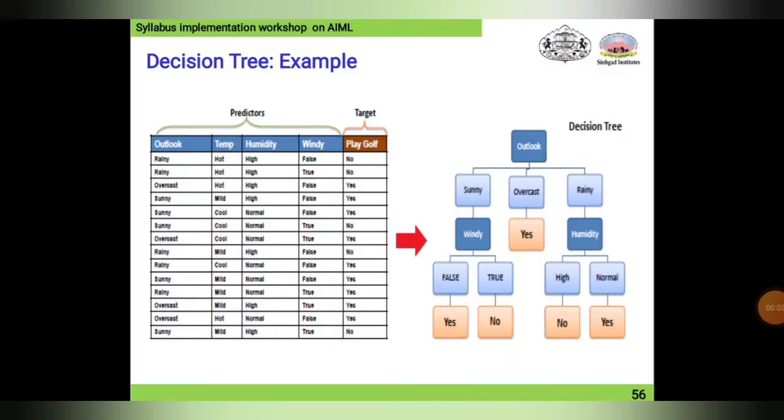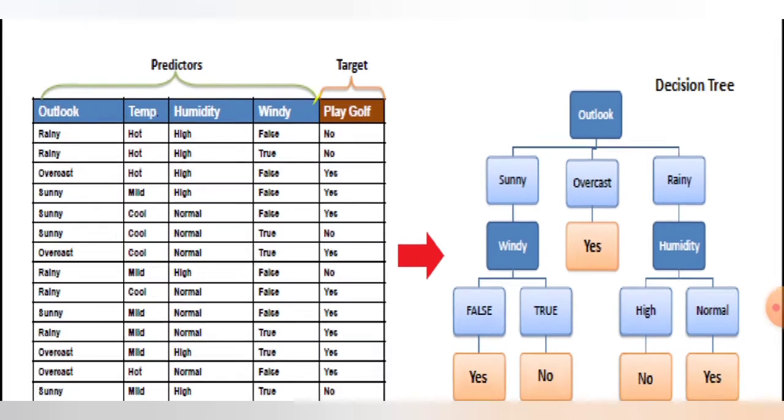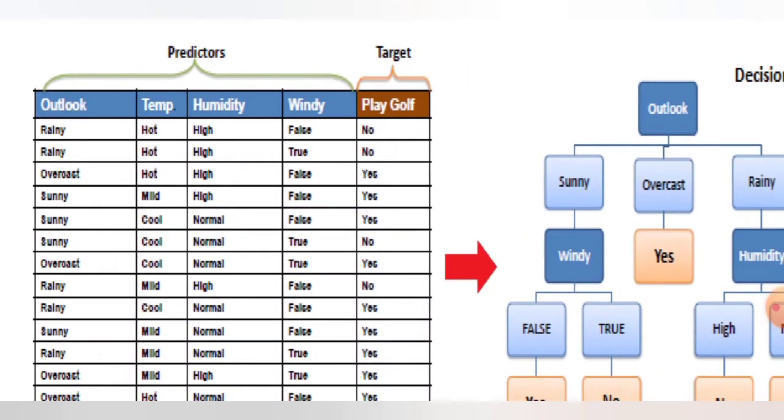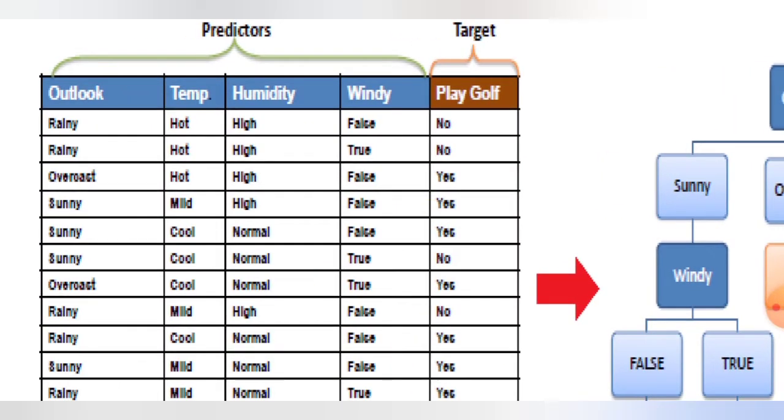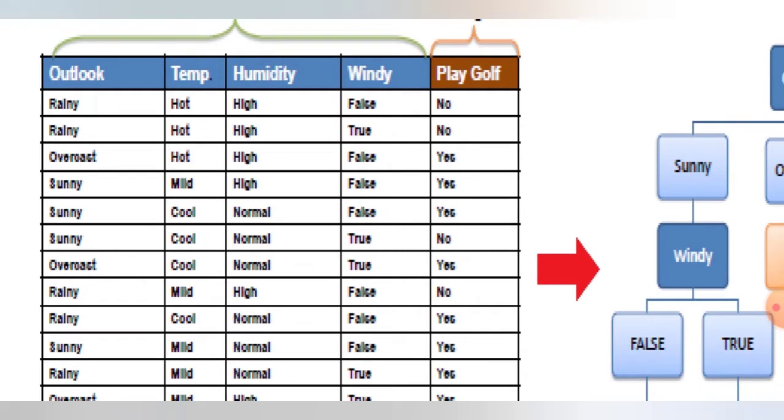Now, next up is a decision tree example. First, I will go through the labels and then explain how it works. As you can see, these are the predictors and the target. Here, the outlook forecasts the upcoming weather and how the temperature, humidity, and environment will be suitable for playing golf.